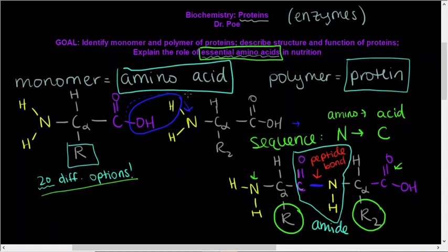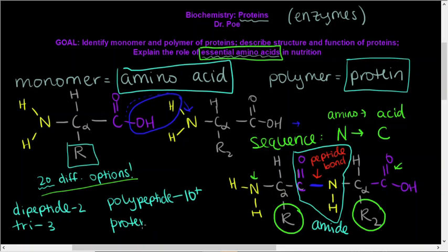And in terms of structure, I just want to say, just really quickly, just like we saw in carbohydrates, a dipeptide, that's going to have two amino acids. A tripeptide is going to have three amino acids. A polypeptide, that's going to have 10 or more. So dipeptide 2, tripeptide 3, a polypeptide 10 or more. And a protein is going to have like 10,000 or more. 10,000 plus. They're going to weigh a whole lot.